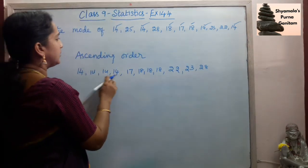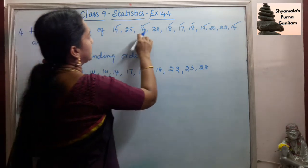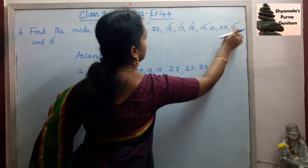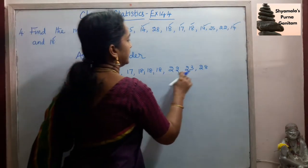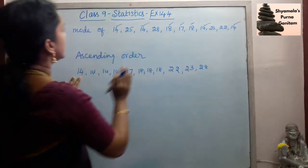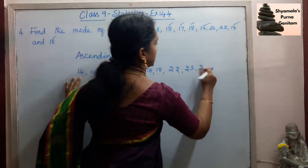So counting: 1, 2, 3, 4, 5, 6, 7, 8, 9, 10, 11, 12 datas are given. One more 25 is there.